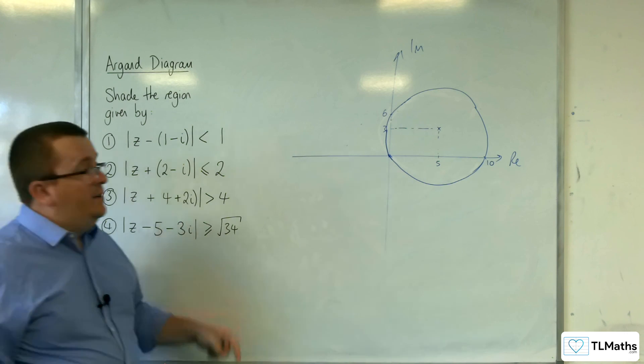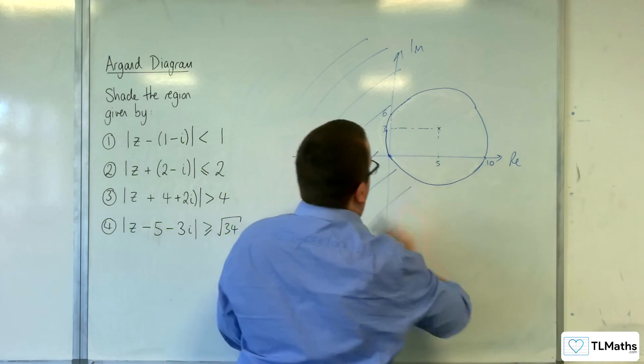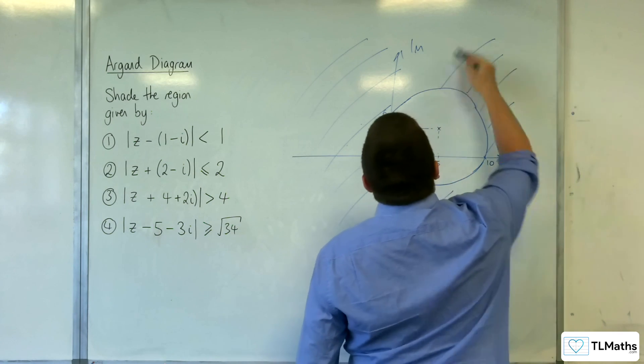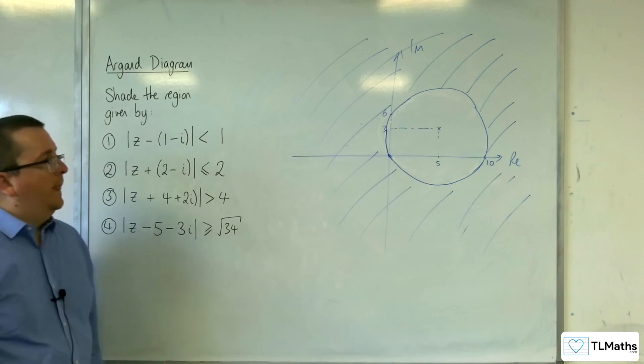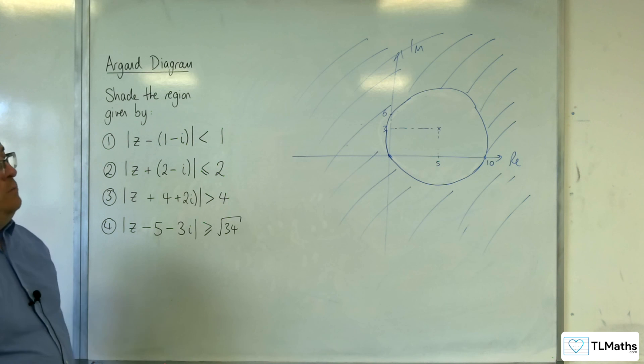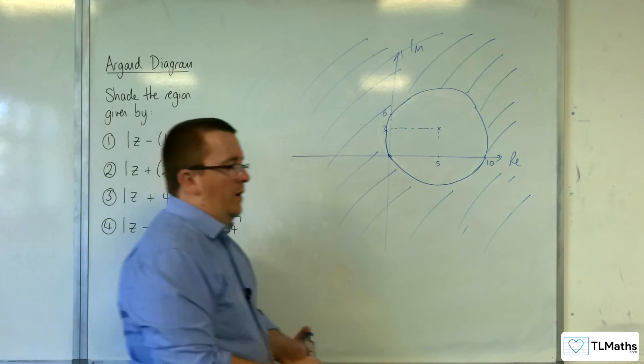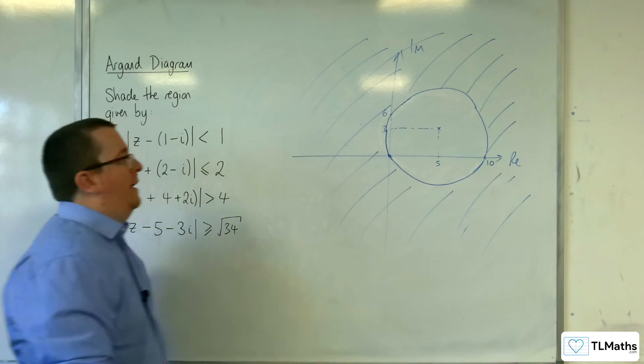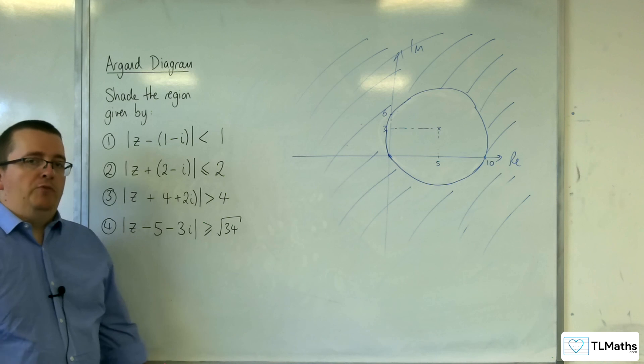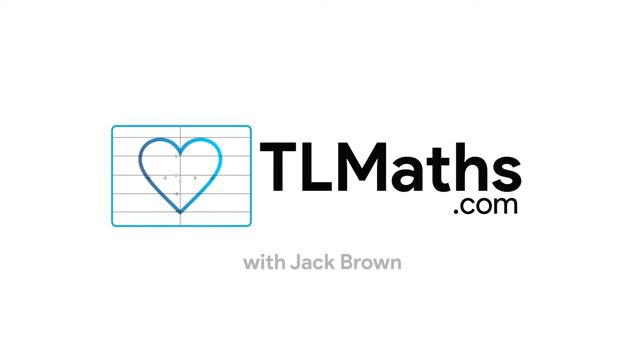So we want the outside because it's greater than or equal to root 34. So you want to shade everything. It's outside the circle like that. Don't go scribbling. Use the same shading technique that I've used in these videos. Otherwise it's going to look incredibly messy. And the examiner won't be able to interpret it correctly. Perfect.